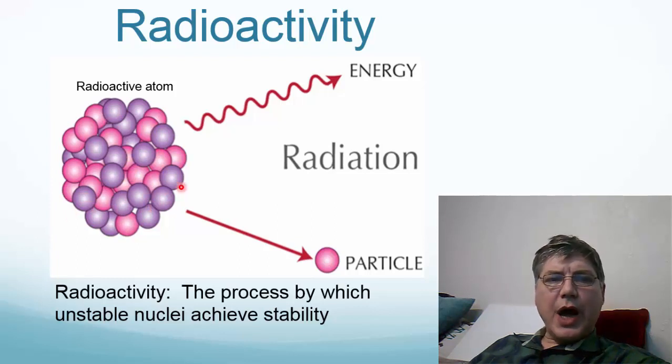The nucleus of an atom is generally not considered when we're talking about general chemistry. Normally we're talking about the electrons and the valence electrons, especially when we talk about a chemical reaction. But the nucleus of an atom can become unstable as well.